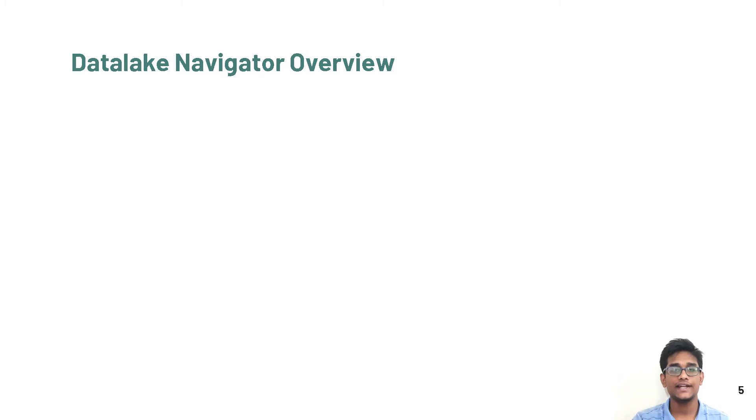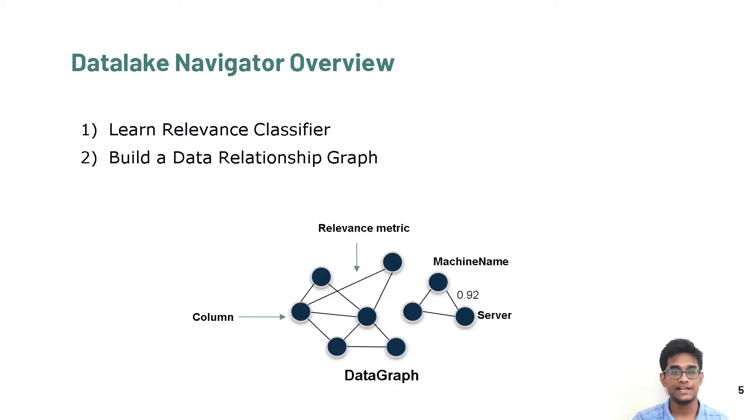We build data lake navigator in a two-step process. First, we learn a relevance classifier using the column pairs which have been joined by developers in the past. Then, we build a data relationship graph, where nodes represent the columns in the data set and an edge represents a relationship between these two columns. Each edge also has a relevance metric, which signifies the probability of a relationship existing between these two columns.